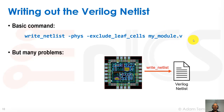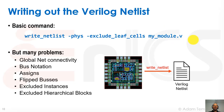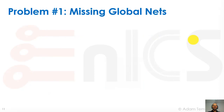But there are many problems that arise in that. We have problems with global net connectivity, bus notation, assigns, flip buses, excluded instances, and excluded hierarchical blocks. I'll be discussing most of these. So our first problem is missing global nets.